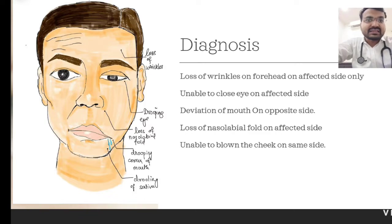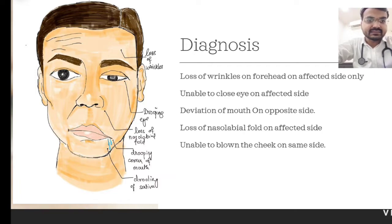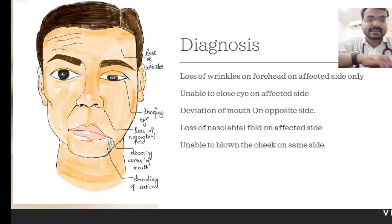The patient is unable to close the eye on the affected side. Third, there is deviation of the mouth to the opposite side. There is also loss of nasolabial folds on the affected side, and the patient is unable to blow up the cheek on the same side.